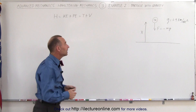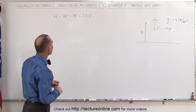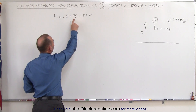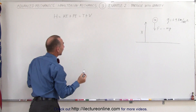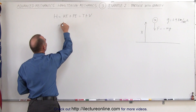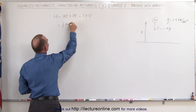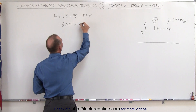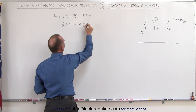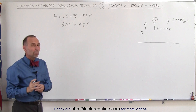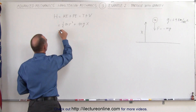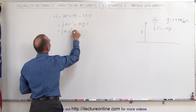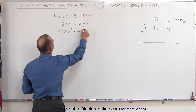Now let's find the equations using the Hamiltonian. We know that the Hamiltonian is simply the sum of the kinetic energy plus the potential energy, also written as T plus V. The kinetic energy of a particle would be equal to one-half mv squared, and the potential energy in this case would be equal to mg times the height, which is expressed as x. Notice that v can be written as x dot, so we can say this is equal to one-half the mass times x dot squared plus mgx.